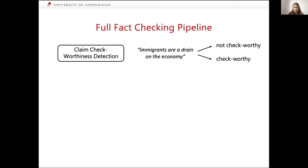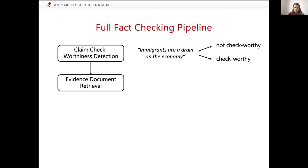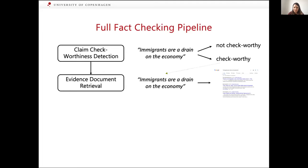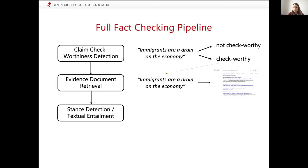Another example: in political debates, statements likely to be check-worthy are things related to a person's political manifesto, not, for example, where they were born. It seems like a simple binary classification task — true or false — but it's actually very complex. Building on this task of claim check-worthiness detection, we have evidence document retrieval, which means for a check-worthy claim we want to retrieve some evidence from a search engine or other methods, which we'll then use to decide if the claim is potentially true or false.